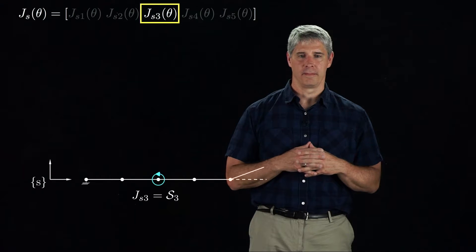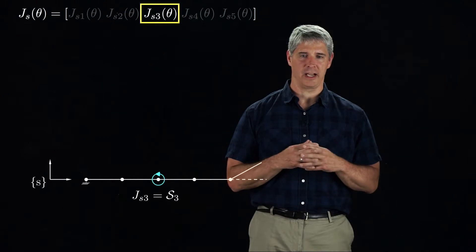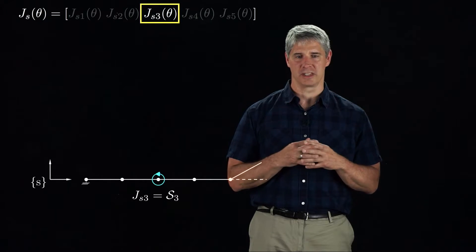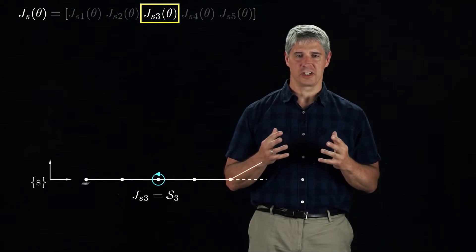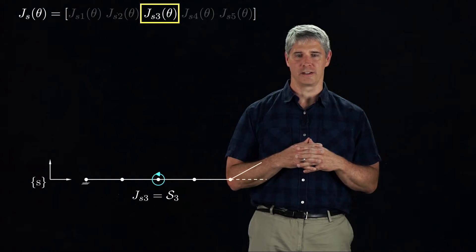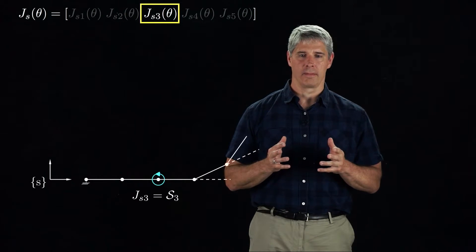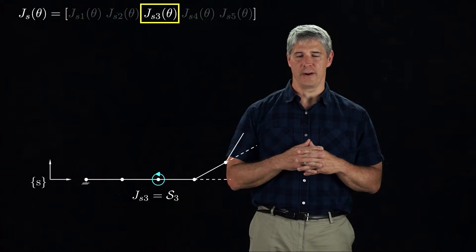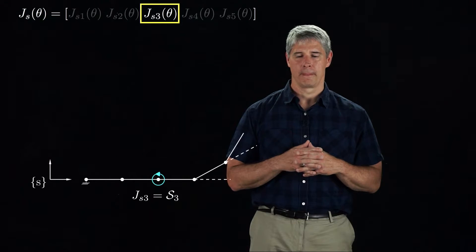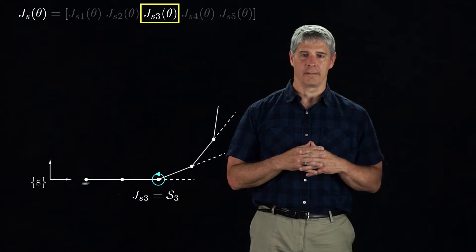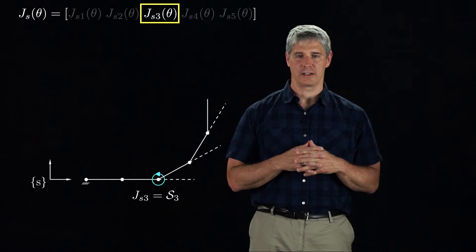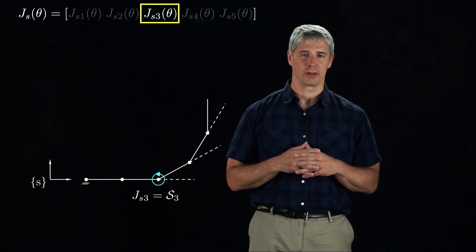First we rotate joint 5. Because joint 5 is not between joint 3 and the S-frame, the relationship between joint 3 and the S-frame is not affected by joint 5's angle. Therefore, Js3 is unaffected by joint 5's value, and Js3 is still equal to S3 at this configuration. Now we rotate joint 4. Again, Js3 is unaffected by joint 4's value. Now we rotate joint 3. Again, the configuration of joint 3 relative to the S-frame is unaffected by this motion, so Js3 is unaffected by joint 3's value.